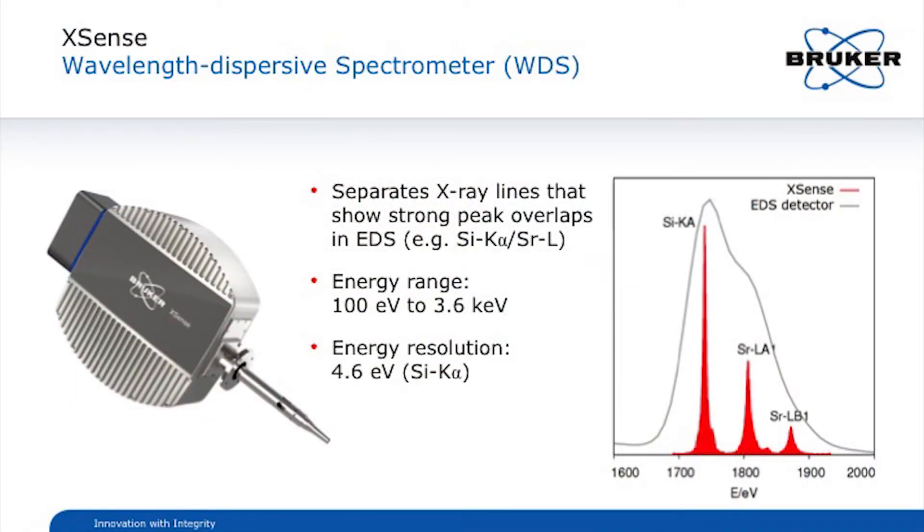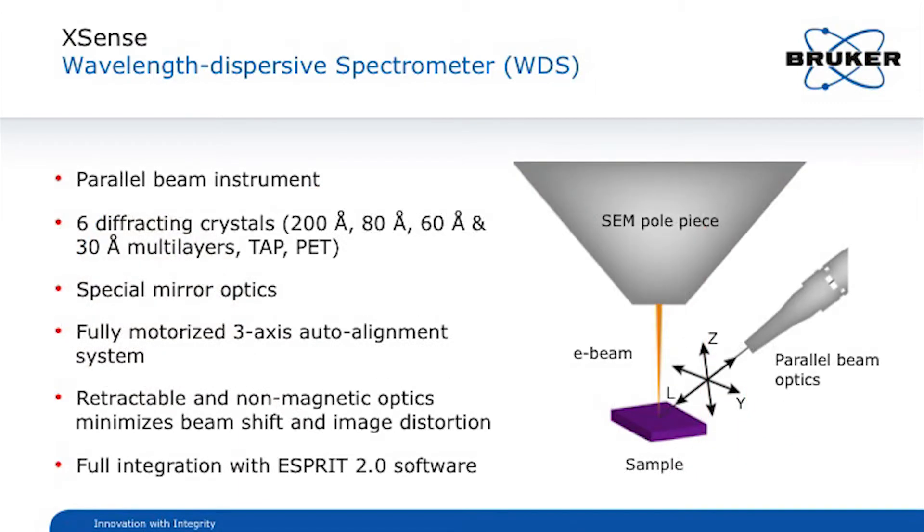The X-Sense is designed for the energy range from 100 eV to 3.6 kV. With the energy resolution we can get down to 4.6 eV for the silicon K-alpha line.